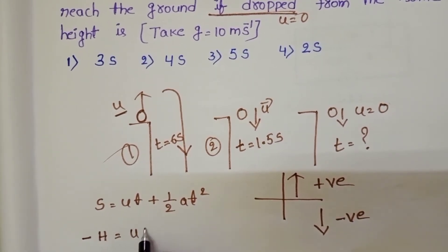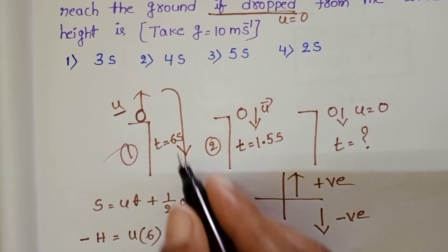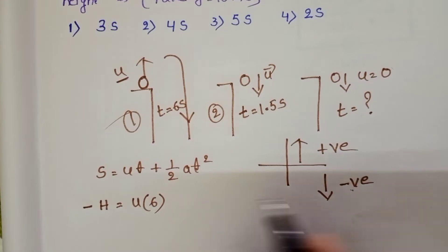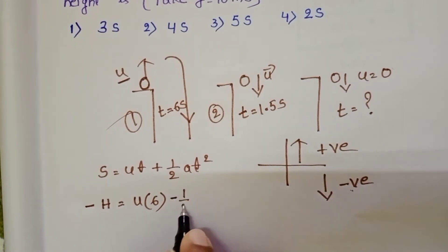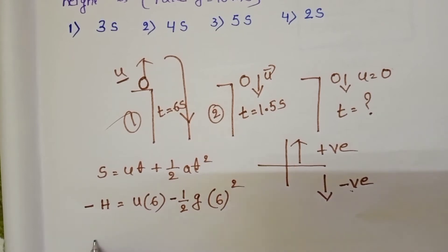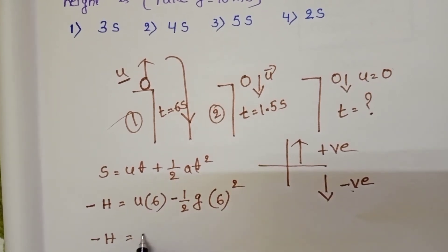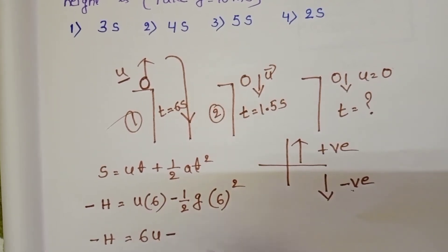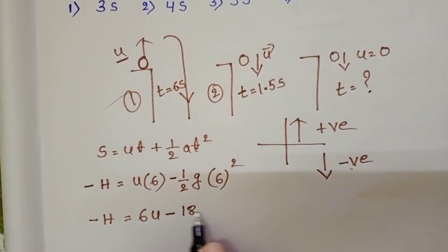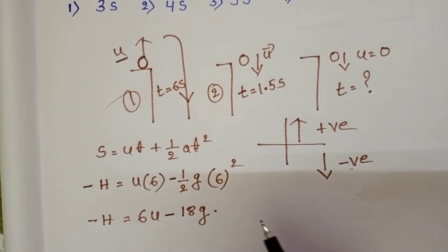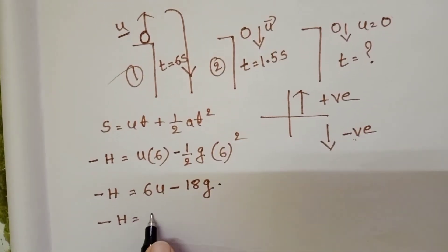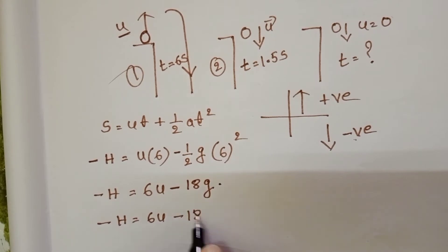For Ball 1, with velocity U and time 6 seconds, G is always acting downward so it is negative. The equation becomes: −H = 6U − ½G(6²) = 6U − 18G. Taking G = 10, this gives −H = 6U − 180. This is Equation 1.